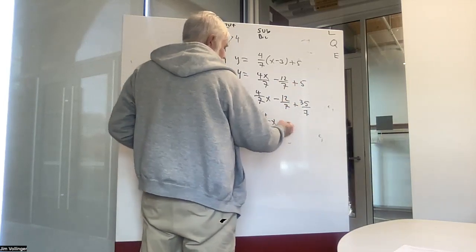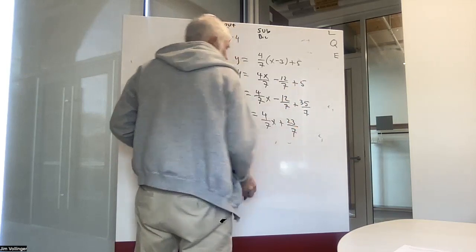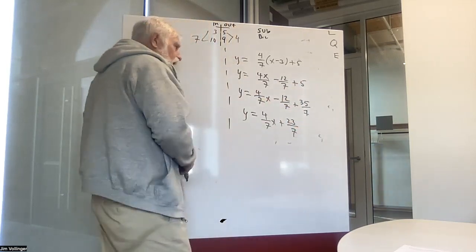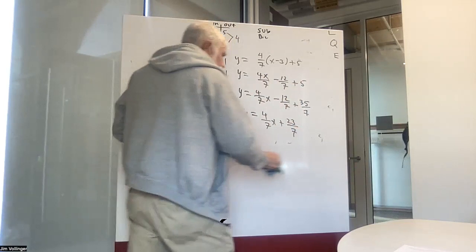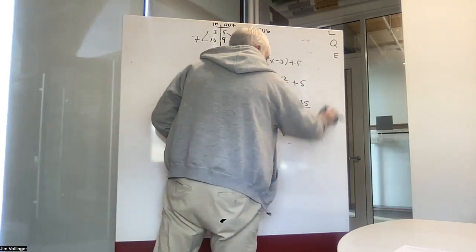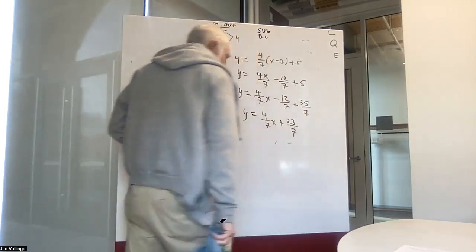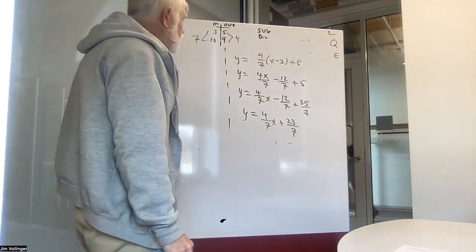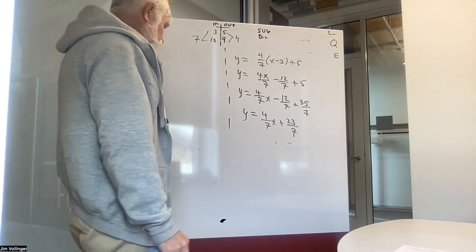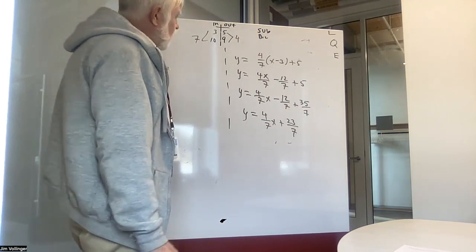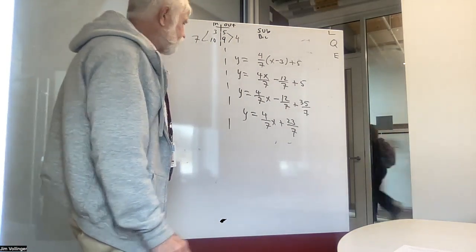The final form is four-sevenths x plus 23-sevenths. I'm giving you this problem to make sure you understand how to multiply fractions and how to add. That's problem number one — the equation of a line in ax plus b form.